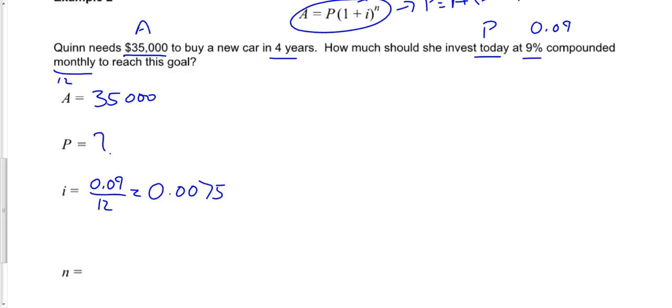0.09 divided by 12 will be 0.0075. And then my N value, I know it's going to be in there for 4 years times 12 months, so 12 compounding periods per year for a grand total of 48 compounding periods.